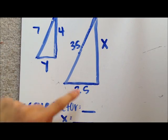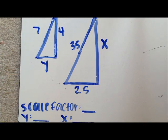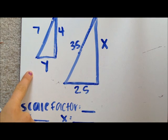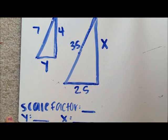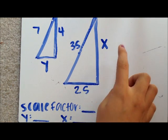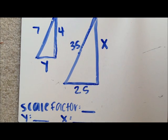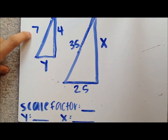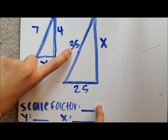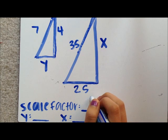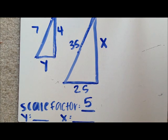7 times the Scale Factor is 35. So Y is on the smaller triangle, so you must divide by the Scale Factor. And X is on the larger triangle, so you must multiply by the Scale Factor. So you would do 7 times what is 35? It's 5. 7 times 5 is 35.